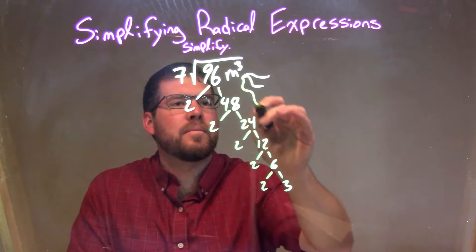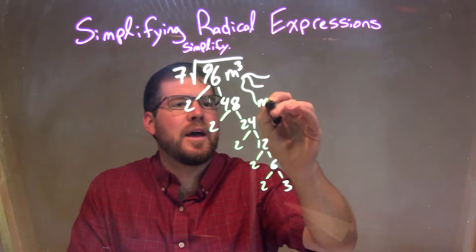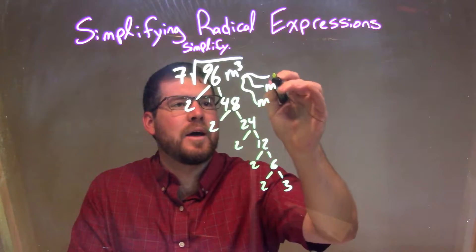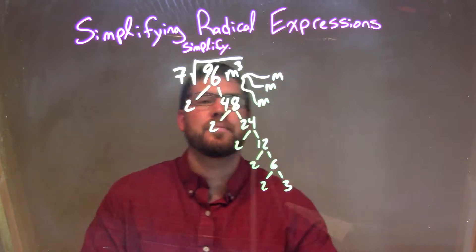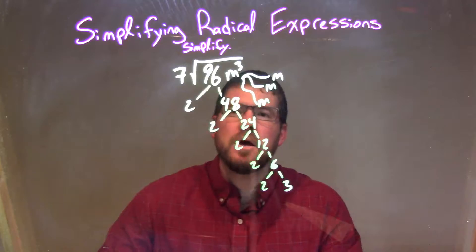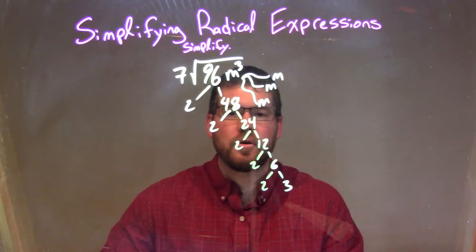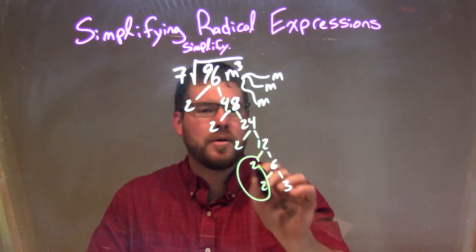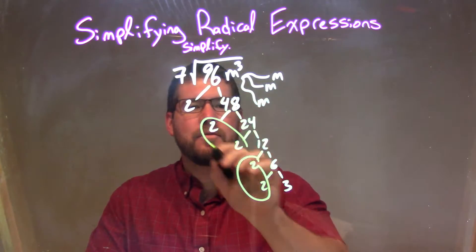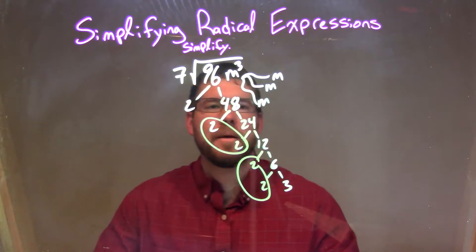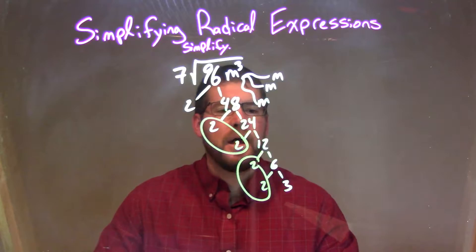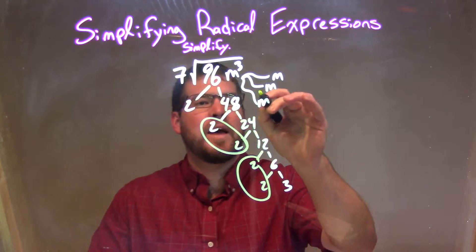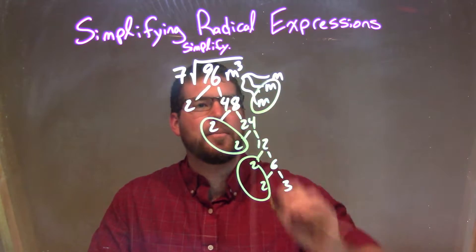m to the 3rd is m times m times m. So now let's go circle some pairs. We have a pair of 2s right here. We have another pair of 2s, and that's it. And then we have a pair of ms as well.